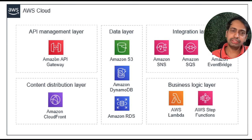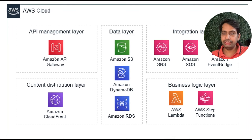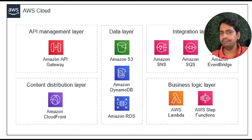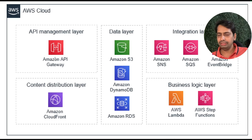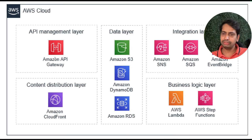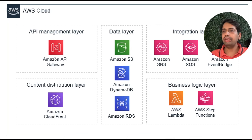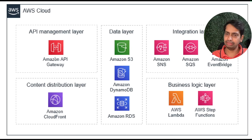In serverless, there are different categories. APIs are represented by API Gateway. The data layer covers how you store data — RDS, DynamoDB, Aurora, or S3 for object-based storage. For integration of microservices, both synchronous and asynchronous — particularly for asynchronous, event-driven architecture — you send an event to a service. For example, a create-order Lambda handles a request and then sends an event to EventBridge, SNS, or SQS.